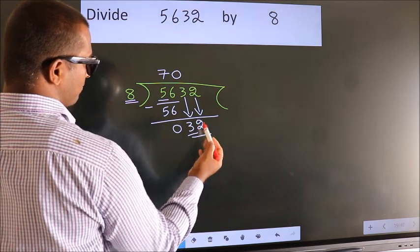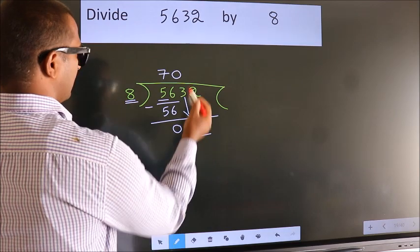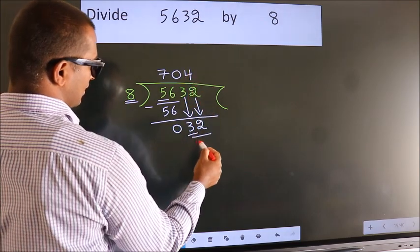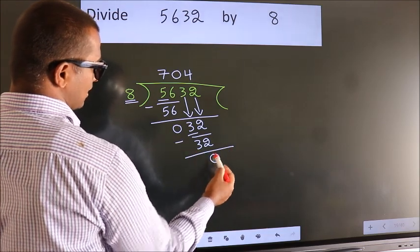So, 32. When do we get 32? In the 8 table. 8 times 4 is 32. Now we subtract. We get 0.